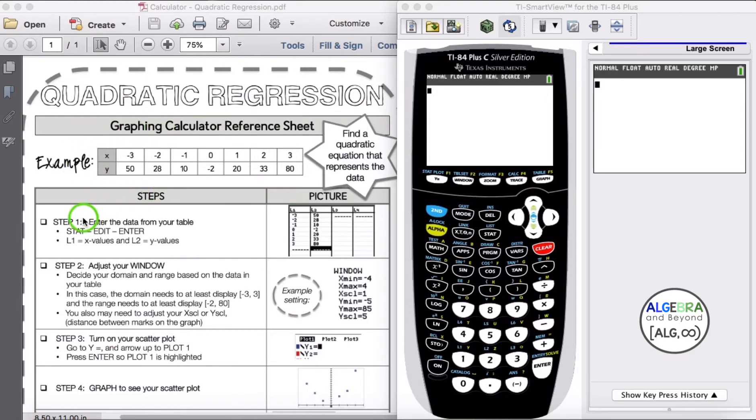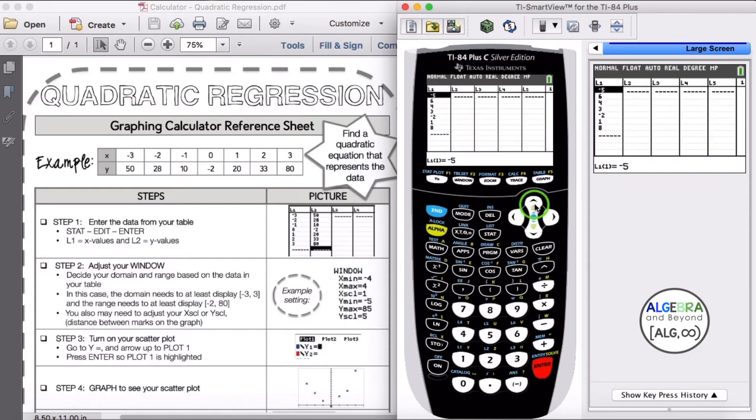So we're going to start with step 1, enter the data from your table. Choose STAT, and then choose EDIT, which is number 1. I can see that I already have some data in L1, so I want to arrow up and clear all of the data out. I'm going to choose CLEAR and then click ENTER.